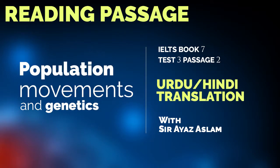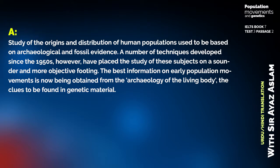Assalamualaikum students, today we will discuss population movements and genetics. This is Book 7, Test 3, Section 2. The title of this reading passage is 'Population Movements and Genetics.'